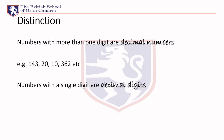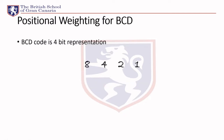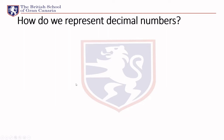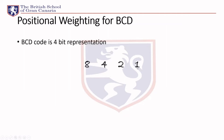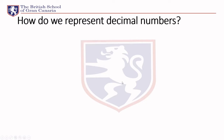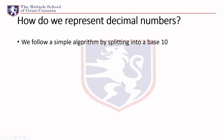If we look at the positional weighting for BCD, this is simply a four-bit representation. Basically, each digit is going to be four bits in binary. So this would be 1000, and this would be 0100, and so on for each digit.